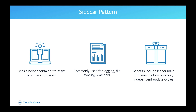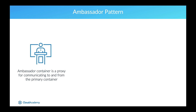It's worth pointing out that all of these benefits are also true for the other multi-container design patterns that we'll cover. The second pattern we'll cover is the ambassador pattern. The ambassador pattern uses a container to proxy communication to and from a primary container. The primary container only needs to consider connecting to localhost, while the ambassador controls proxying the connections to different environments. This is because containers in the same pod share the same network space and can communicate with each other over localhost.